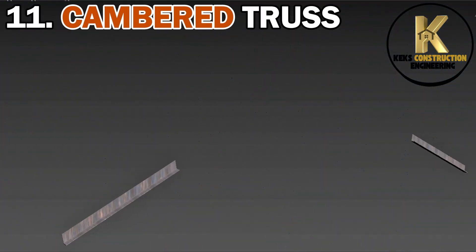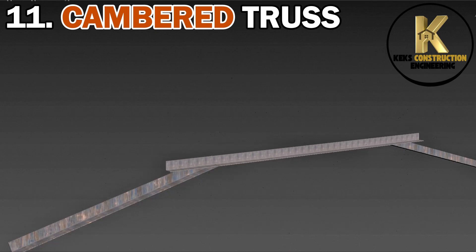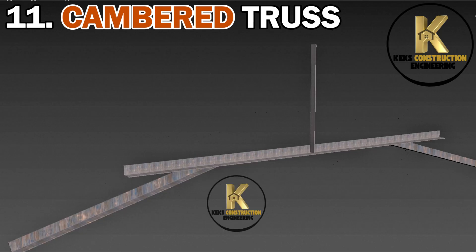11. Cambered Truss. This features a slightly arched top cord for extra strength, often used where deflection control is important.